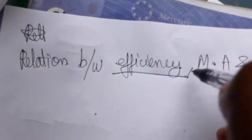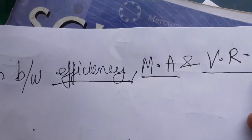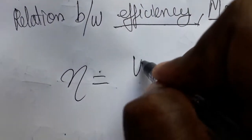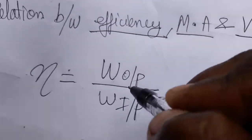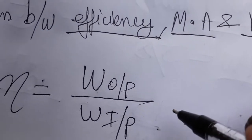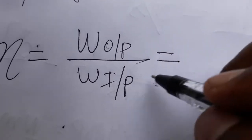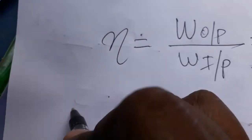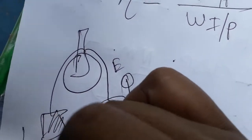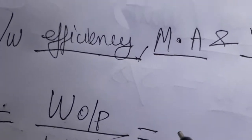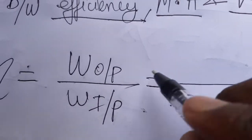We are going to find the relation between efficiency, mechanical advantage, and velocity ratio. Efficiency is work output divided by work input. Work done is force into displacement. In this case, input is effort and output is load. We are taking a fixed pulley, so whatever you apply is effort, and the object being lifted is the load.